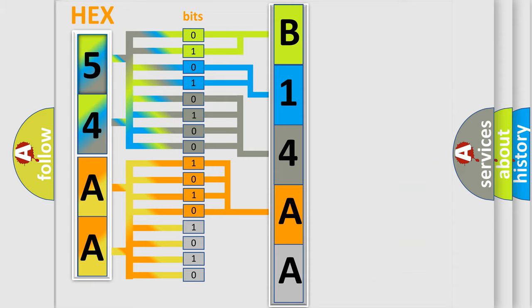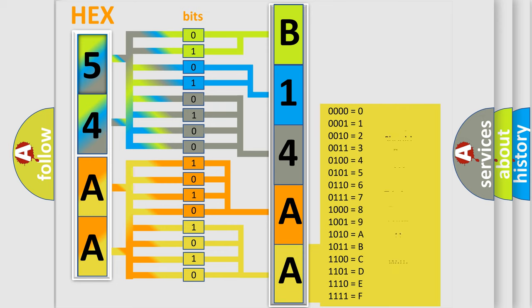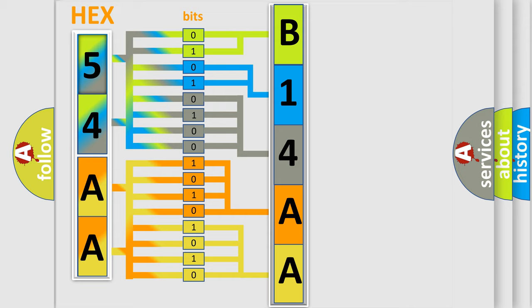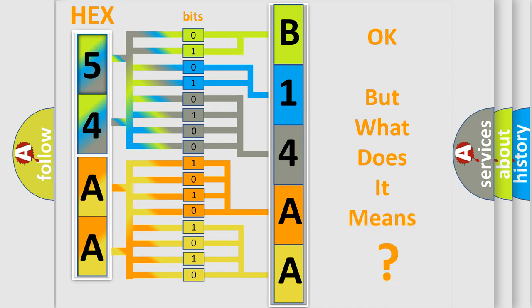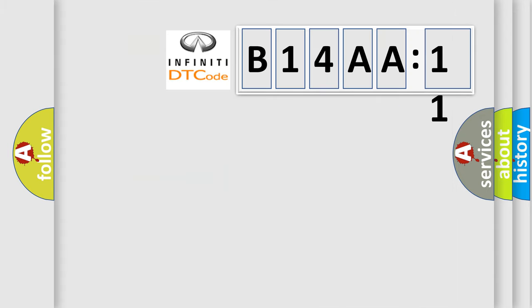A single byte conceals 256 possible combinations. We now know in what way the diagnostic tool translates the received information into a more comprehensible format. The number itself does not make sense to us if we cannot assign information about what it actually expresses. So, what does the diagnostic trouble code B14AA11 interpret specifically for Infiniti car manufacturers?